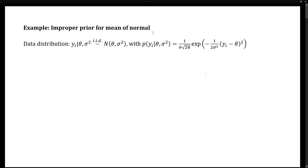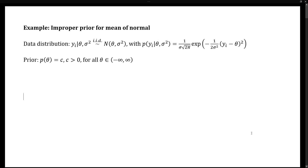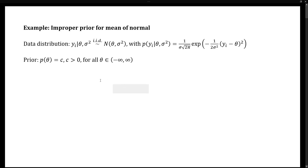The marginal density of an observation conditional on knowing the parameters is shown here. The prior density is uniform over the real line. This is an improper prior because the integral of a constant over the real line diverges to infinity. This prior is stating that any value of theta is equally likely to occur over the real line, so negative 10 billion is just as likely to occur as 3.